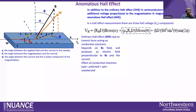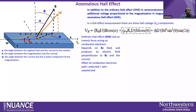What is anomalous Hall effect? In addition to the ordinary Hall effect seen in semiconductors and metals, there is an additional voltage proportional to magnetization in magnetic materials, and that is called the anomalous Hall effect.